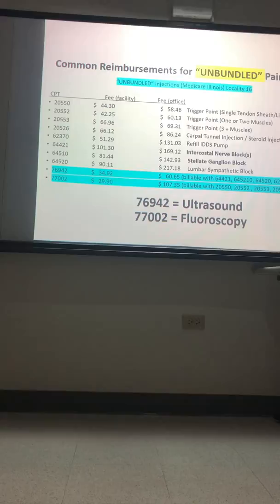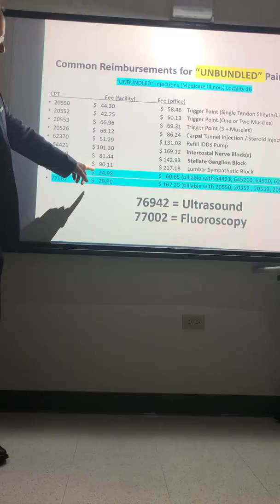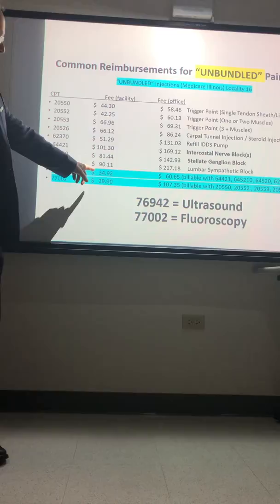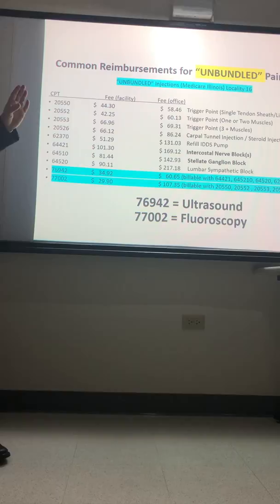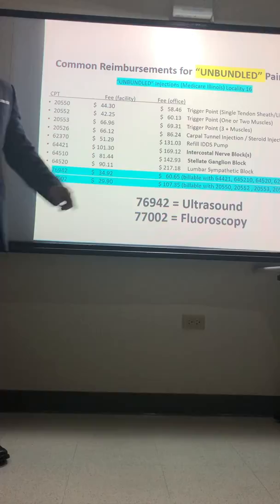Study these two numbers — they are really important for billing. CPT 76942 is when ultrasound is used during your procedure. CPT 77002 is when fluoroscopy is used. These are unbundled codes, which means you can bill for the procedure and separately for the imaging. If you use ultrasound in the office, you get an extra $60; with fluoro in the office, an extra $107. In the hospital, it's about $35 for ultrasound and $30 for fluoro. This is Medicare data for Illinois in 2020.